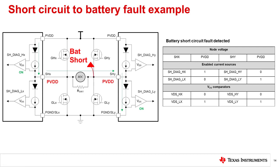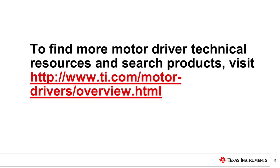In this short circuit to battery fault example, the load is connected to SHX but short-circuited from SHY to battery. The SHX and SHY voltages both sit at PVDD. Since the bottom left and bottom right comparators have a positive difference between their terminal voltages, their outputs are high. Meanwhile, the top left and top right comparator outputs are low. In this case, the comparator outputs can be interpreted as a short circuit to PVDD fault. To find more motor driver technical resources and search for products, visit the link here for more information.